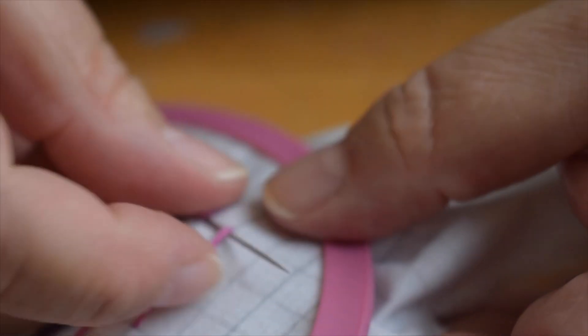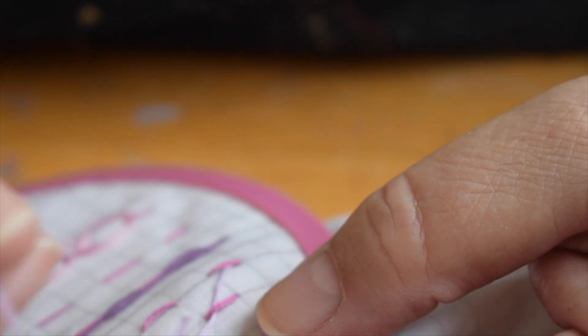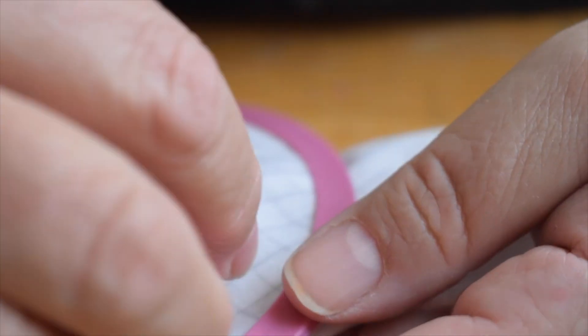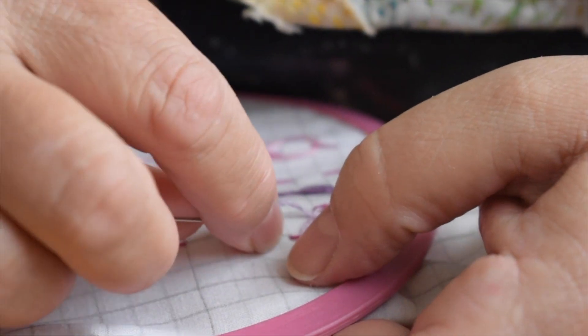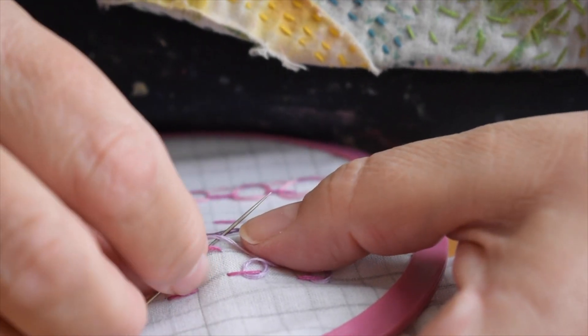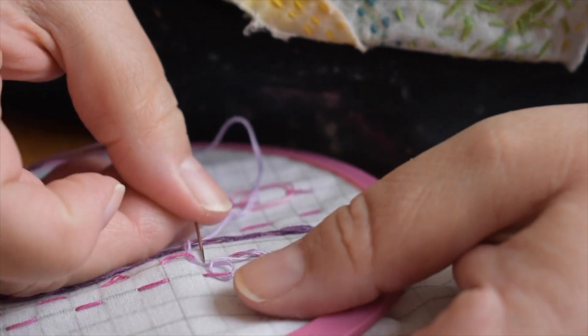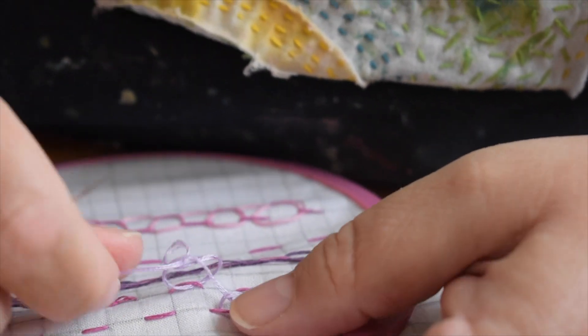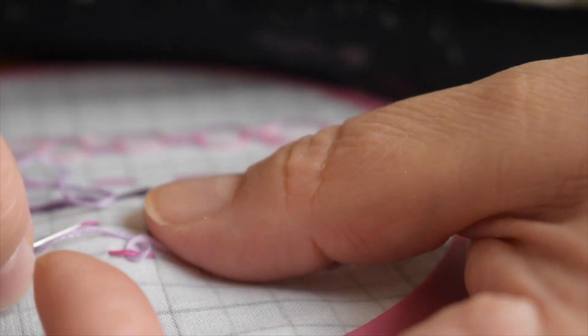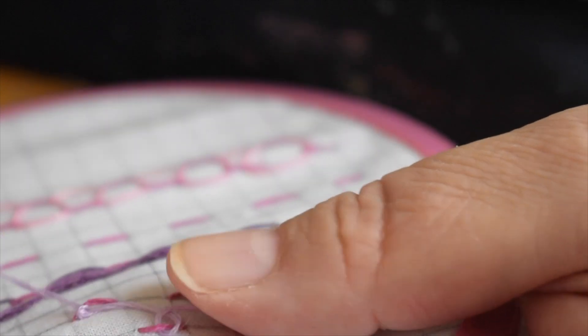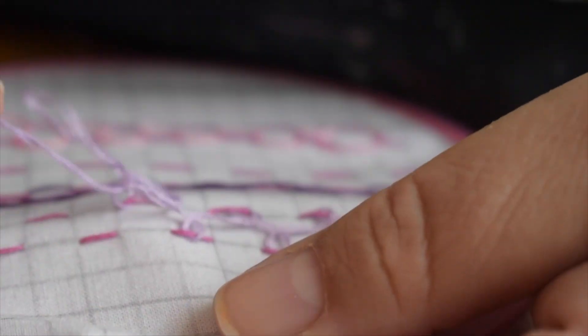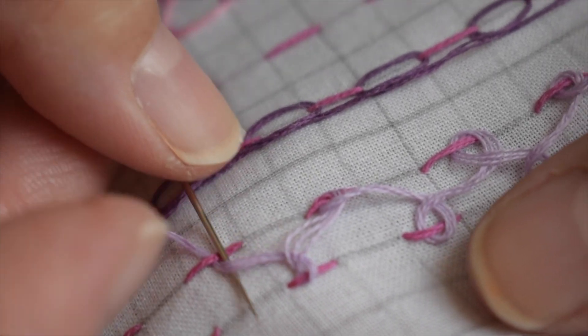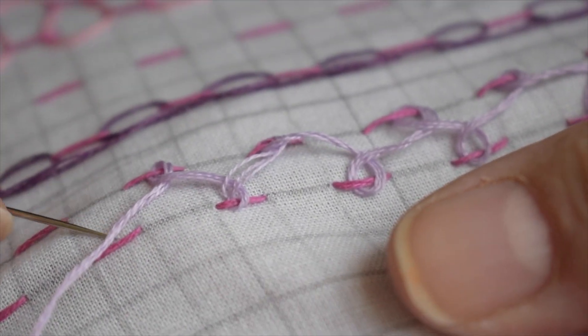So now I take a contrasting thread. You don't have to but it looks great that way. So what happens is on this one you come down from one, you loop it to the left and bring down. And then you go up through the next one and you loop it to the left and down, making sure that you went underneath the thread you just used.